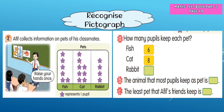Now let's look at the next example. Aviv collects information on the pets of his classmates. He asks his friends to raise their hands to choose their favorite pets. The data findings have been classified and arranged in a table. The symbol used is a starfish, and one starfish picture represents one pupil.